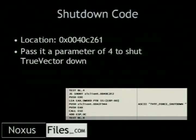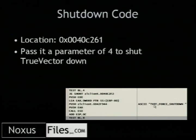Now we have to find a way to shut it off — this takes some reverse engineering. After a while of grinding through code, you find there's this little function at a specific hex location. It seems to be a pretty reliable address that doesn't change much. The funny part is — if you can see it — 'tvtf_forced_shutdown' right there. Basically, if you pass it a value of four, it will tell TrueVector to screw off and don't do anything. So that's pretty fun.